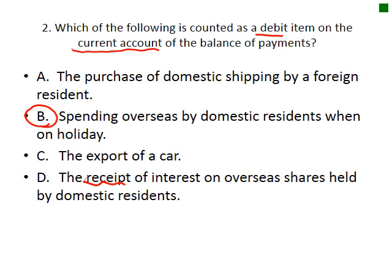Which of the following is counted as a debit item on the current account of the balance of payments? Remember: if you pay with a debit card, money is automatically taken out of your account — so it must be money flowing out. On the current account it relates to income on investments or exports and imports. Spending overseas by domestic residents when on a holiday definitely counts, as it is akin to an import because money is flowing out.